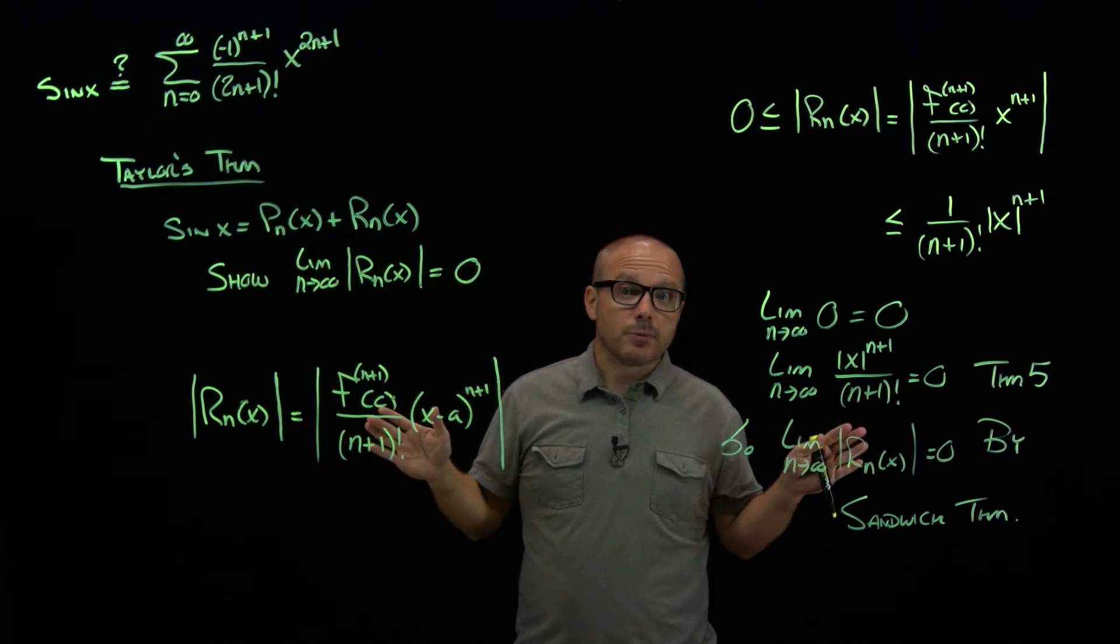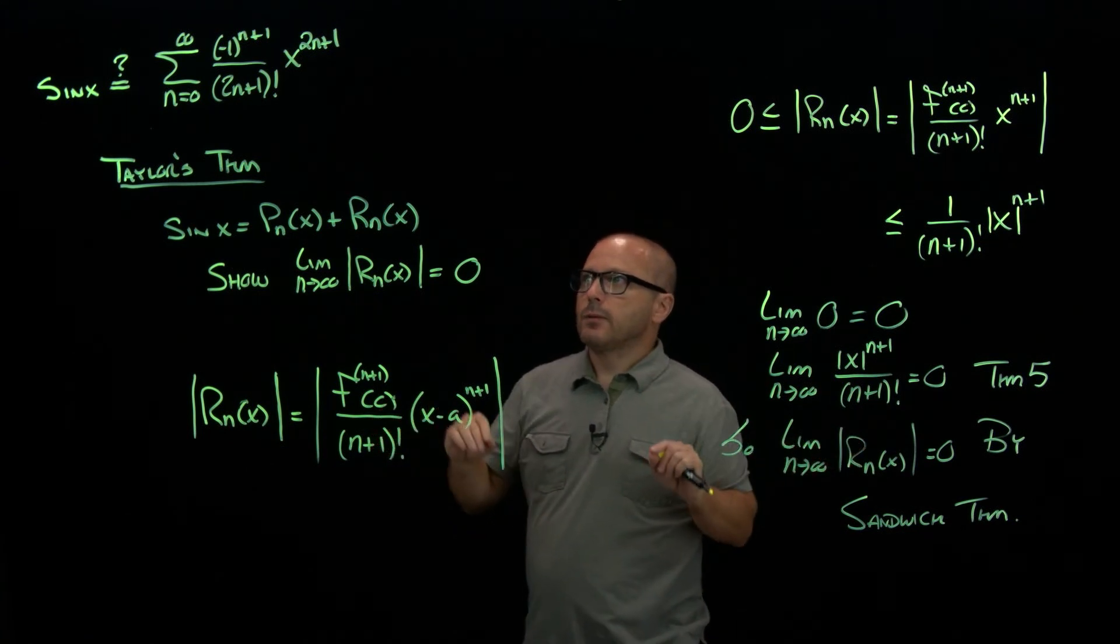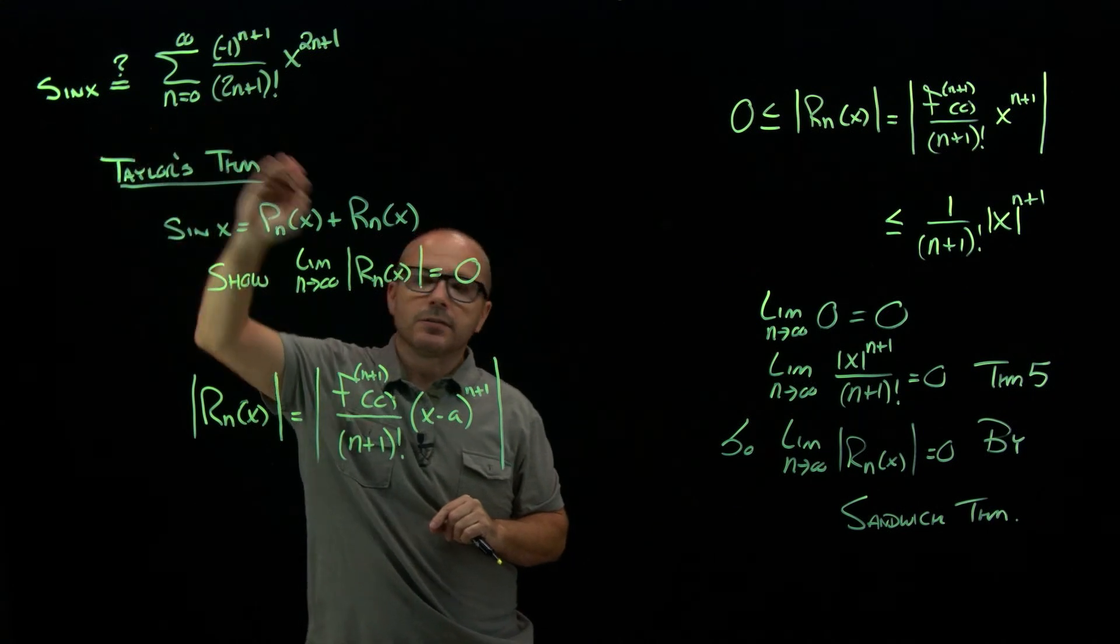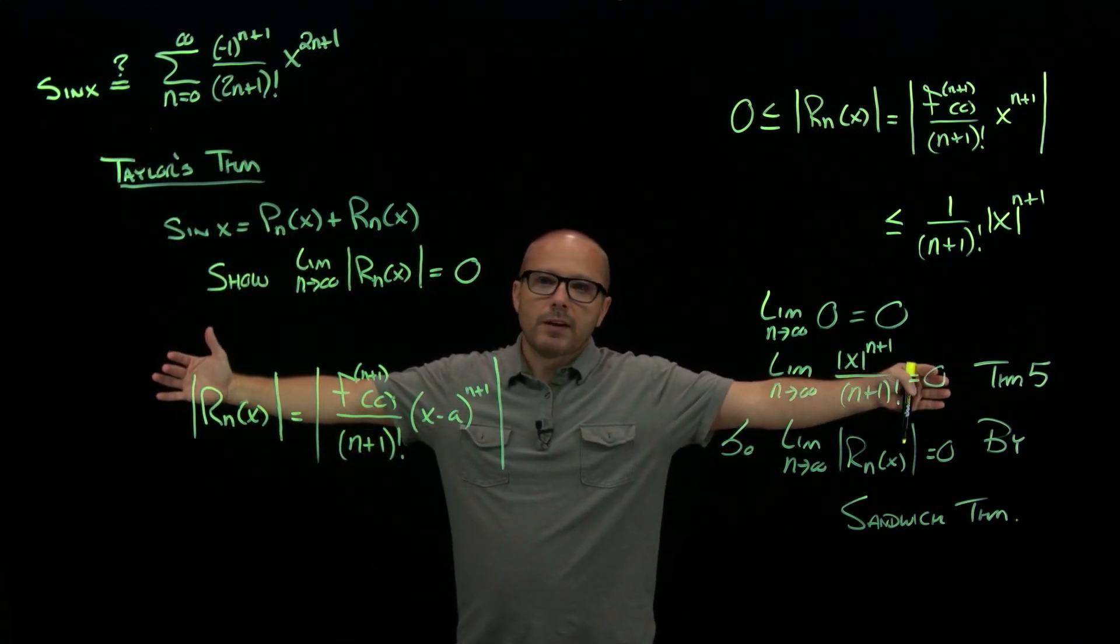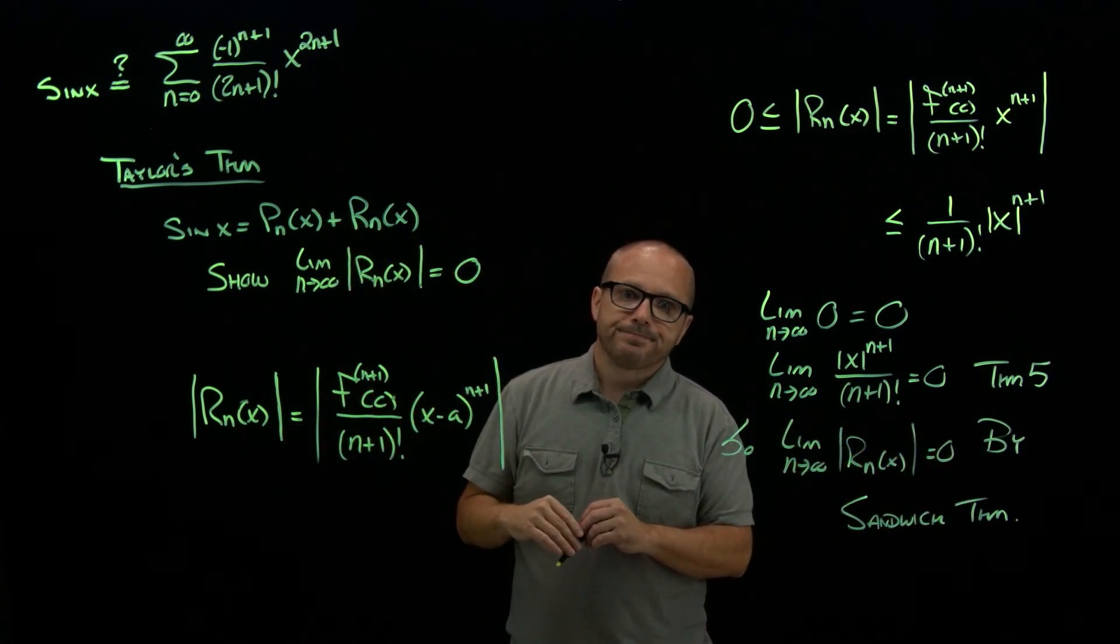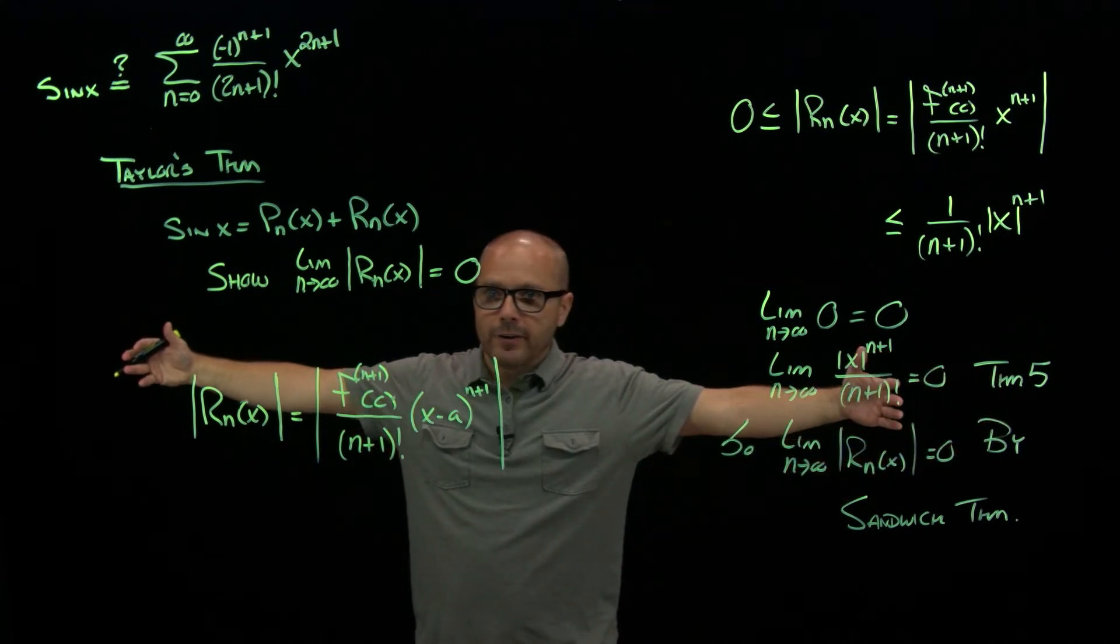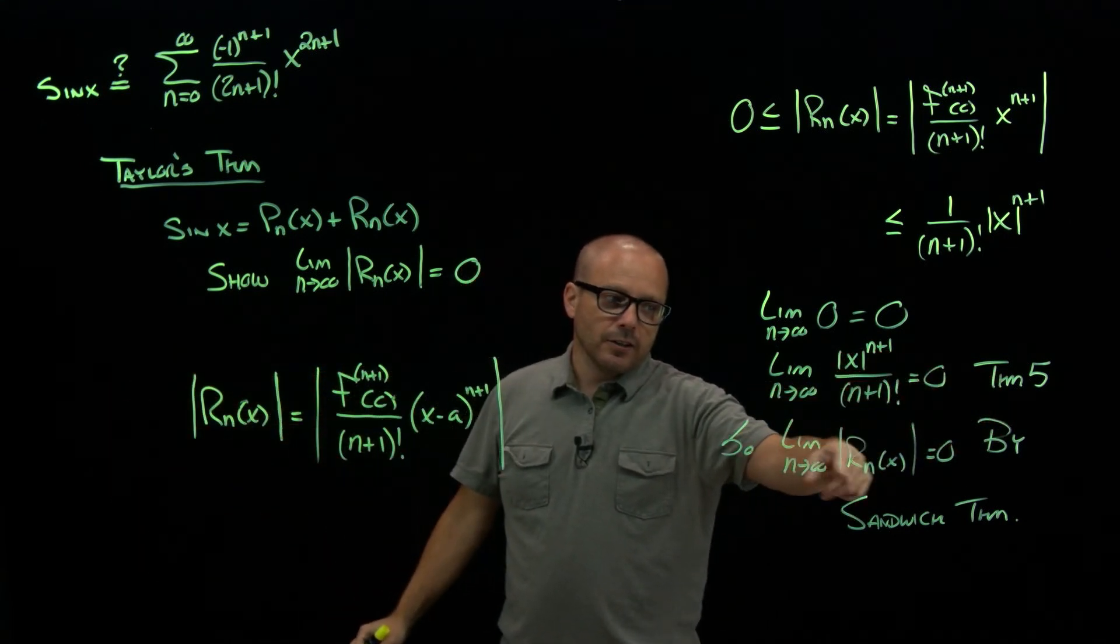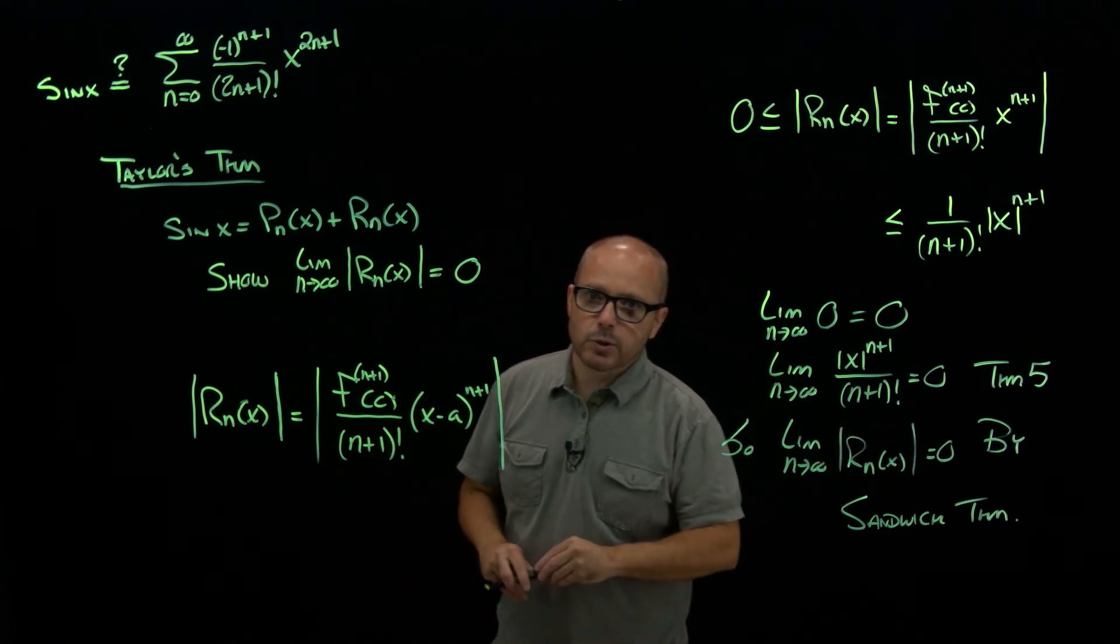And they are identical everywhere. So we created this only at 0. We made this by matching derivatives at 0. Our a was 0. But it turns out you can go as far away from that as you like, and the two are still equal. Because the error, now it might take longer, the farther from 0 you are on the graph, it might take longer and longer for this to get small, but it'll eventually get as close to 0 as you like.